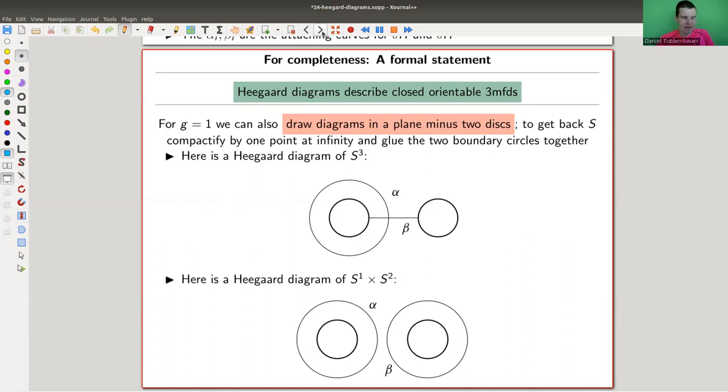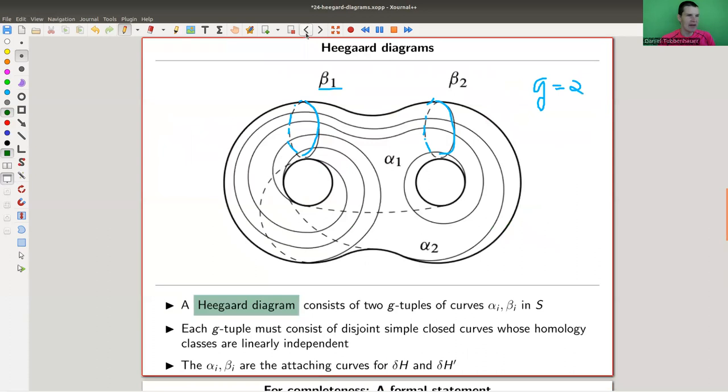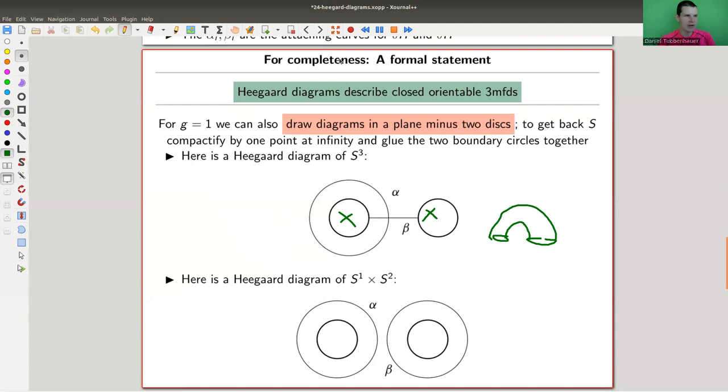So for g equals one, and this works actually for g arbitrary, you just kind of draw those little disks instead of the handle bodies. And you think of them as just being bended together into the handle, you know, something like here's a disk, here's a disk, and here's a handle. And so you really draw diagrams in the plane minus two disks, and the two disks should represent the handle. And to go back to s, so s, let me just say it again. So this one, the gluing surface, s is the boundary of both, the boundary of h and the boundary of h prime. So the surface genus is g. So to get back s, you should think of like compactifying at infinity to get the sphere, and then gluing those circles together to get a handle. And then you can draw the Heegaard diagrams, in this case just alpha and beta directly on the plane, which is a bit easier to imagine.